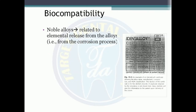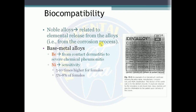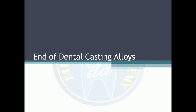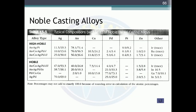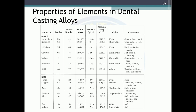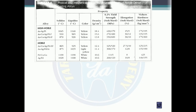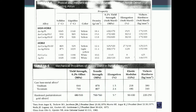Biocompatibility: Noble alloys present concerns related to elemental release from corrosion. Base metals — beryllium exposure can cause contact dermatitis to severe chemical pneumonitis. Nickel sensitivity is 5 to 10 times higher for females. Elongation is an important property for RPD alloys; for crown and bridge, a low elongation value is not a major concern, but it indicates if the alloy can be burnished.